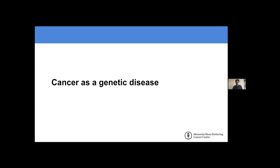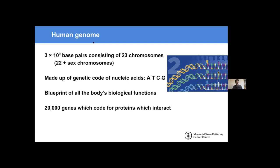The first half of this talk I'm going to talk about how cancer is viewed as a genetic disease. The human genome is made up of a few billion base pairs, which consists of 23 chromosomes — 22 chromosomes plus the sex chromosomes. This genome is made up of a genetic code of nucleic acids — A, T, C, and G — which is basically like a blueprint of the body's biological function. Cancer is when this blueprint goes awry and parts of that code are disrupted, which has consequences for how the body functions.